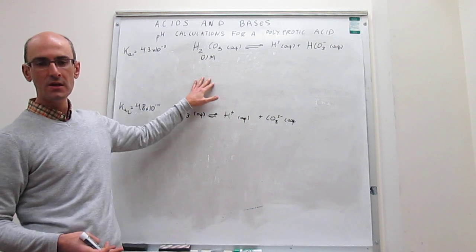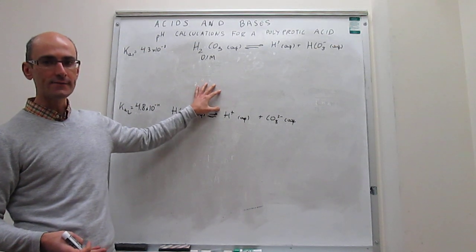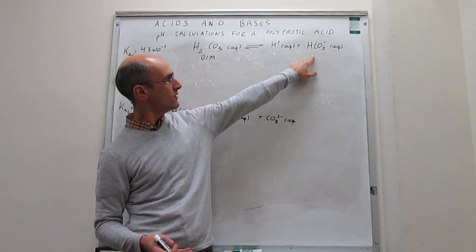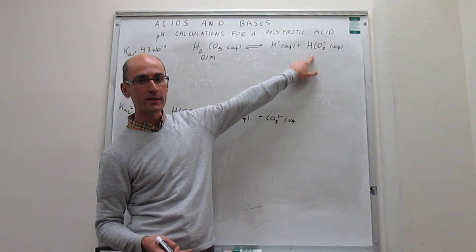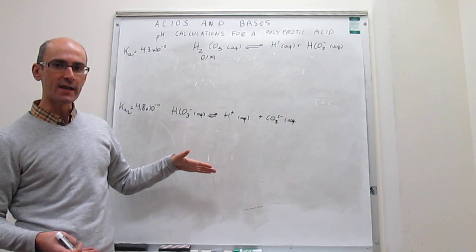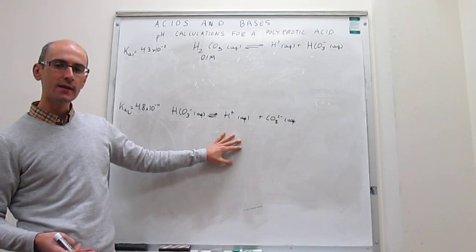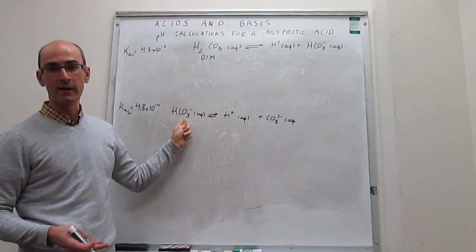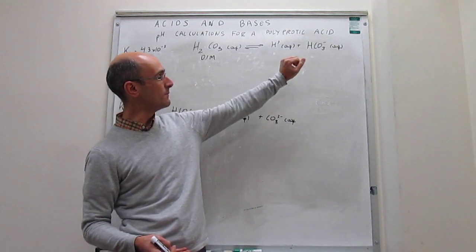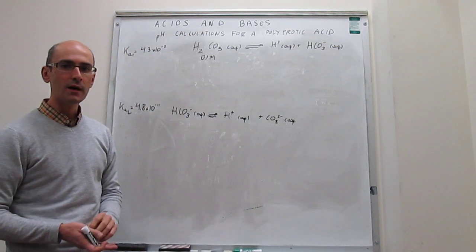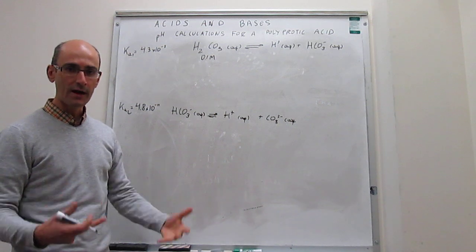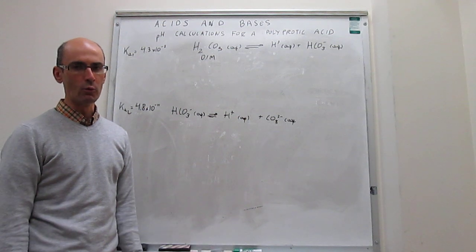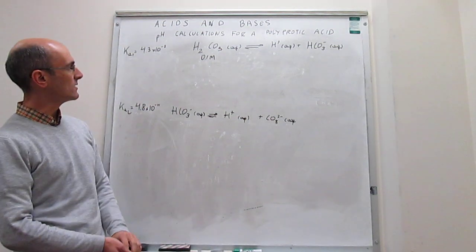We have the initial concentration; we can calculate the concentrations at equilibrium. For the second equilibrium, you actually need to know what the concentration of hydrogen carbonate is in order to write the ICE diagram. You cannot write the second ICE diagram directly because you have no idea what the concentration of bicarbonate is. Instead, you're going to have to use the concentration that comes from the first equilibrium before you can solve the second ICE diagram. From both ICE diagrams, we will get the total concentration of protons and then calculate the pH.